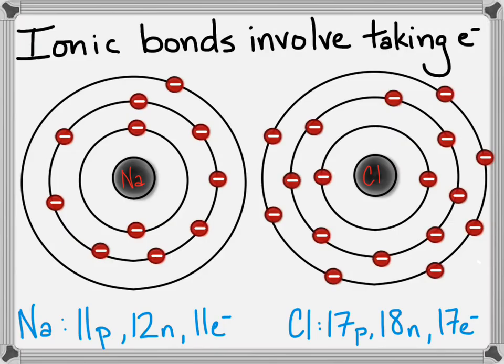So, once sodium loses this electron, let's see if I can grab it here. Well, I didn't grab the charge. But once it gains that electron, it will be negatively charged, and sodium will become positively charged. Because now, we've got 10 electrons, and over here, we have 18.